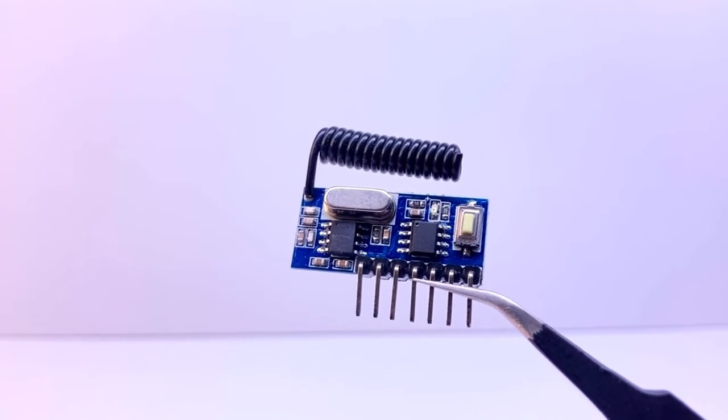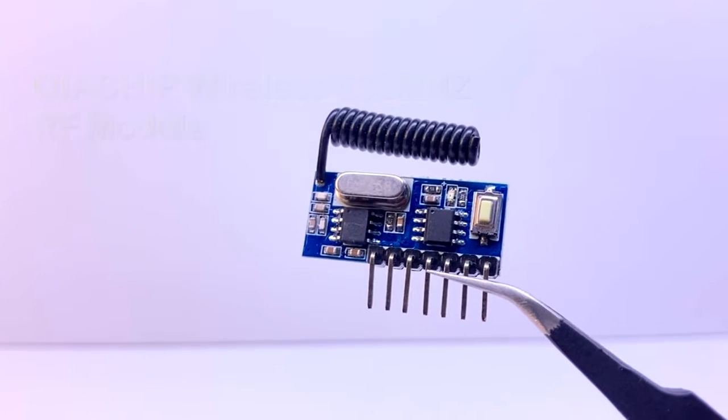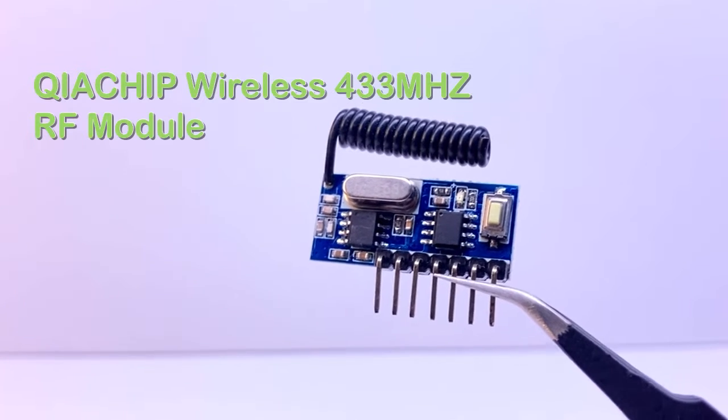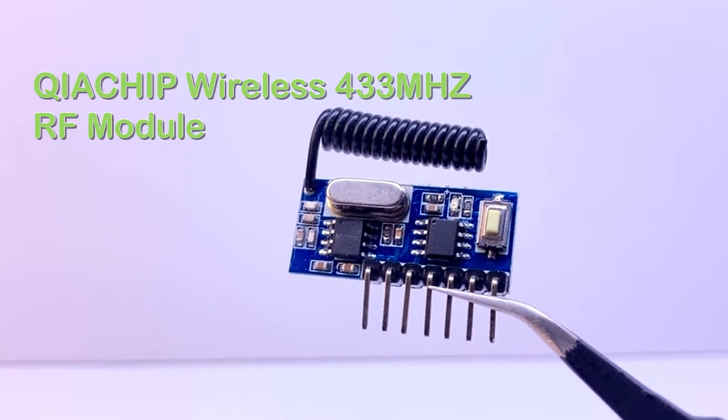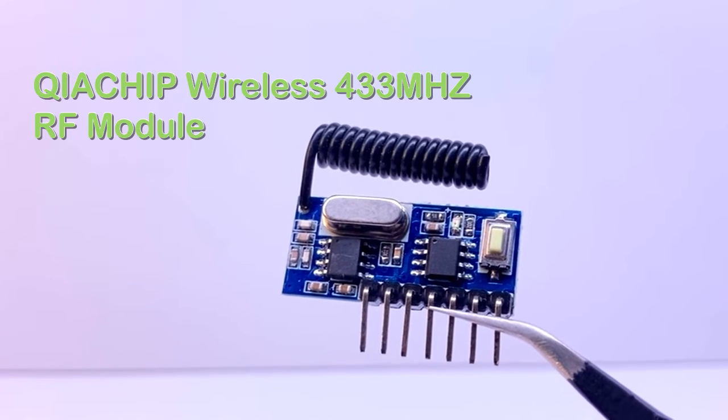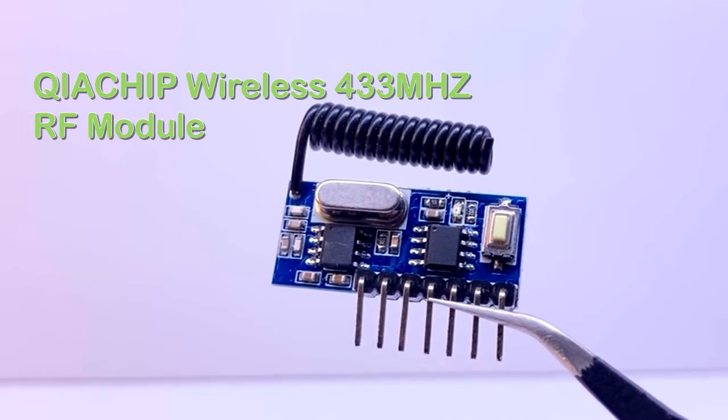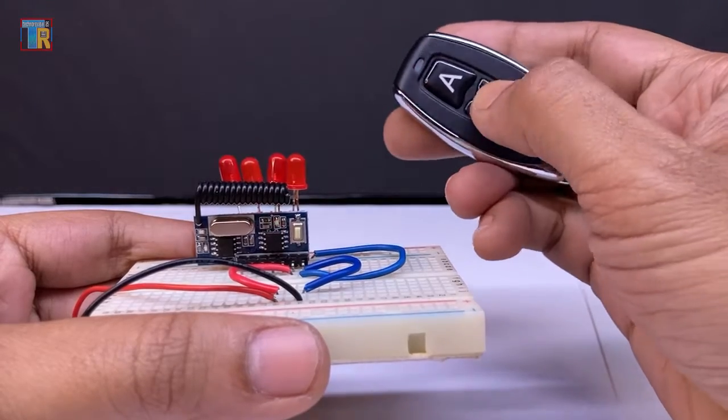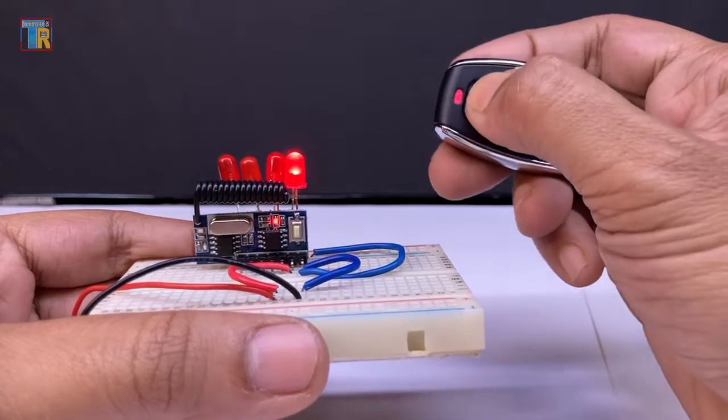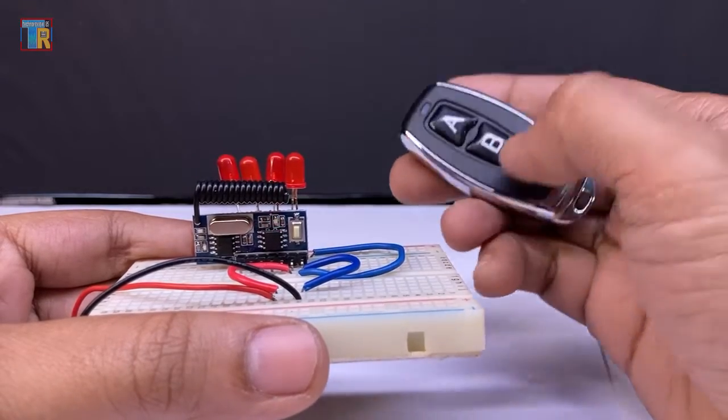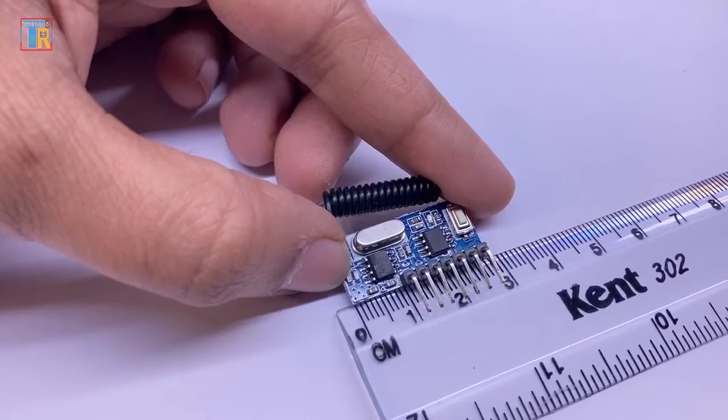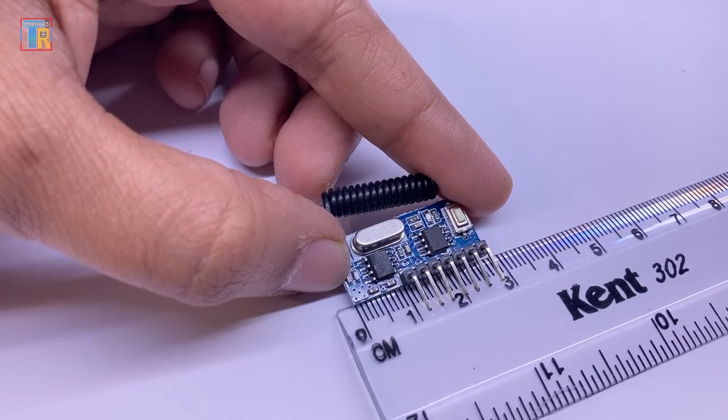In this video I will show you a different 433 megahertz receiver module. It can learn any remote code and it is very easy to use. You can control your devices with a strong signal. It can also be used in home automation or remote control projects without Arduino. This module is very small in size, less than three centimeters.